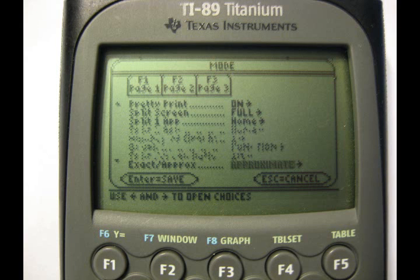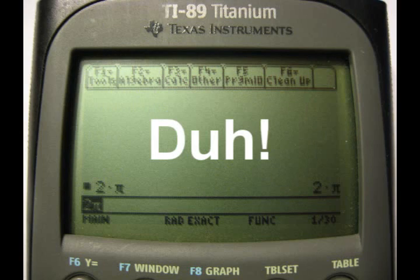But don't forget to switch back to approximate, because it can be really annoying when it says 2 pi equals 2 pi.